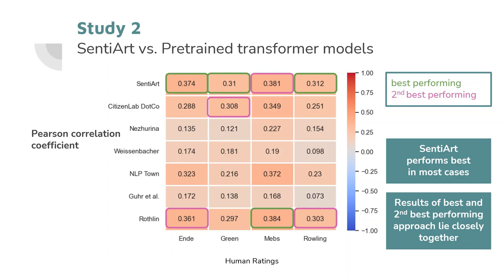The transformer models Rothlin and citizenlab.co, and to some extent NLPTown, reach correlation values similar to SentiArt. Especially the model Rothlin shows promising results, which we found quite surprising since it was trained on hotel reviews, a genre not very closely related to the literary texts we examined. This indicates that when working with pre-trained transformers in sentiment analysis, the match between the genre of training data and the genre of analyzed texts is not a priority.